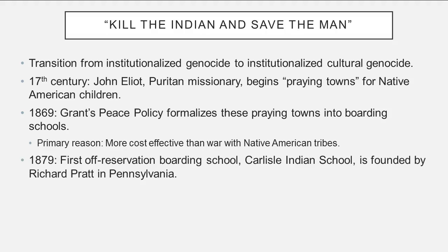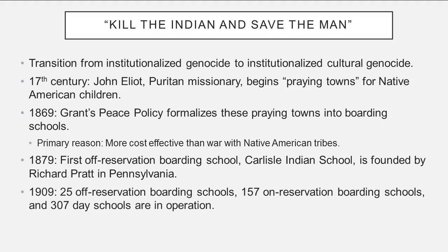In 1879, the first off-reservation boarding school — the Carlisle Indian School — was founded by Richard Pratt in Carlisle, Pennsylvania. By 1909, there were 20 off-reservation boarding schools, 157 on-reservation boarding schools, and 307 day schools in operation. You have this proliferation of schools specifically for Native American children, whose ultimate purpose was to assimilate them into settler ways of knowing.